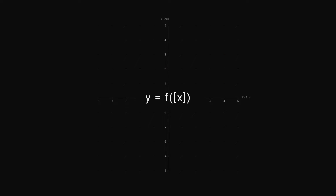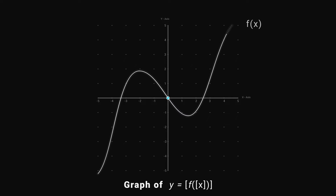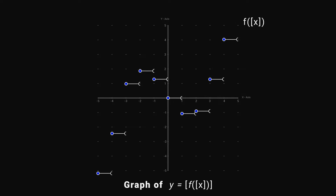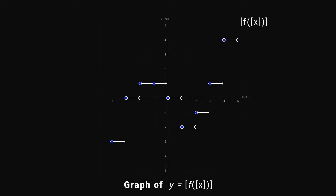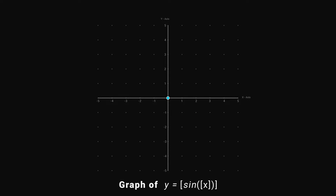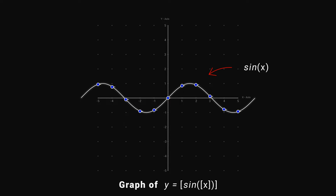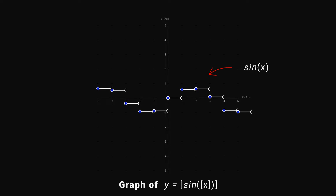Now, what if we combine both of them? In this case, first draw f(x), then transform it to f(⌊x⌋), and then transform it to ⌊f(⌊x⌋)⌋. For example, when y equals sine x, first draw sine x, then transform it to sine of ⌊x⌋, and finally transform it to ⌊sine(⌊x⌋)⌋.